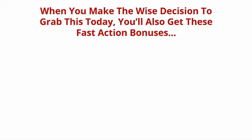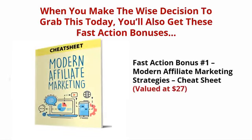And it just keeps getting better. When you make the wise decision to grab this today, you'll also get these fast action bonuses. Fast action bonus number one: Modern Affiliate Marketing Strategies Cheat Sheet, valued at twenty-seven dollars. This cheat sheet is a handy checklist that makes it easy to get started. It breaks up the entire guide into easy-to-follow steps so that you can make sure you have all the highlights of everything covered inside right at your fingertips.